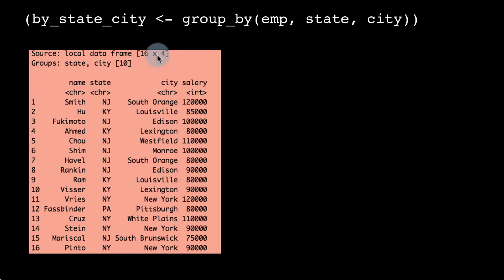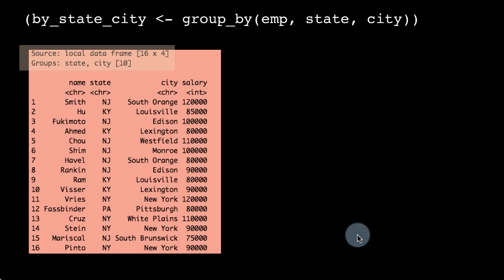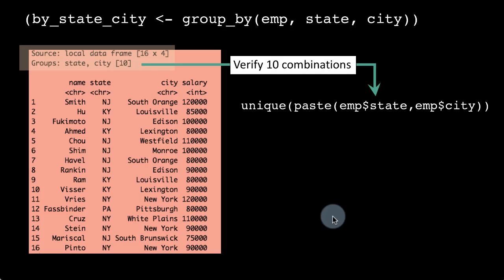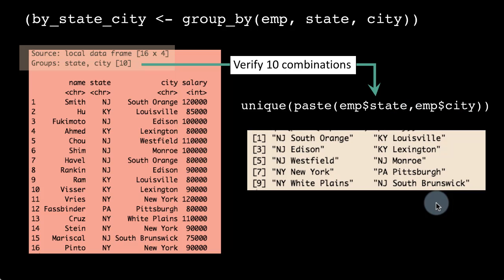Once you group it by state and city, it's showing you that there are 10 unique combinations of state and city. We can verify that by using unique() on paste(m$state, m$city) — what I'm doing is just combining all of them together — and you can see that these are the 10 different unique combinations in this data set.